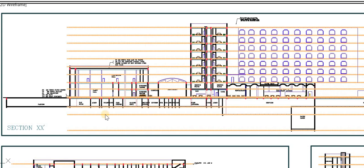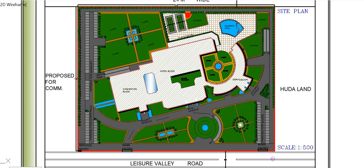This is another section showing the convention block, the restaurant which is open to sky, and the hotel block which consists of the guest rooms. While designing the hotel it is important to understand how we provide services to the guests, because that decision determines how we design the hotel. I hope you like my design — please don't forget to like my videos and subscribe to my channel for more updates. Thank you.